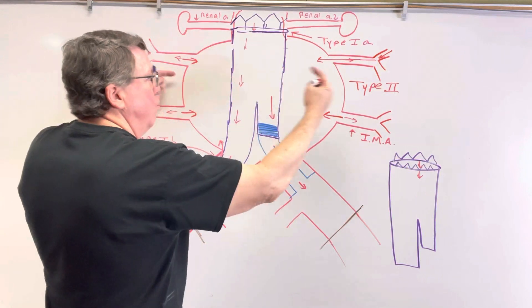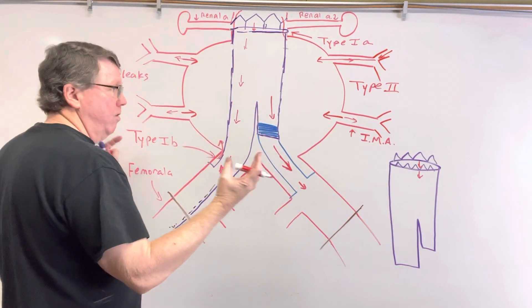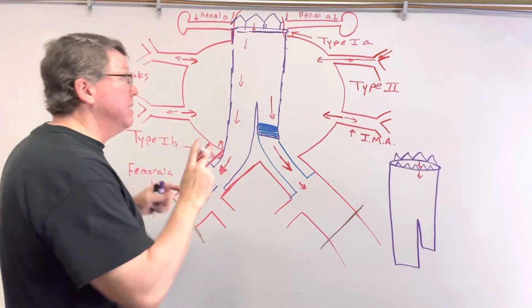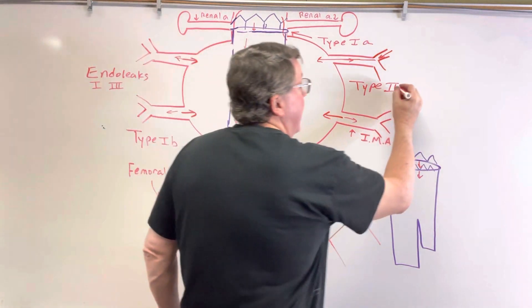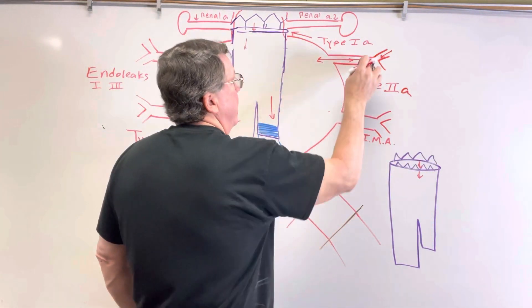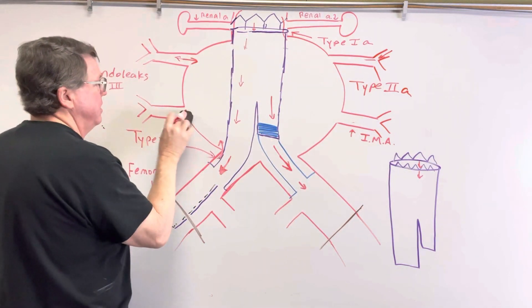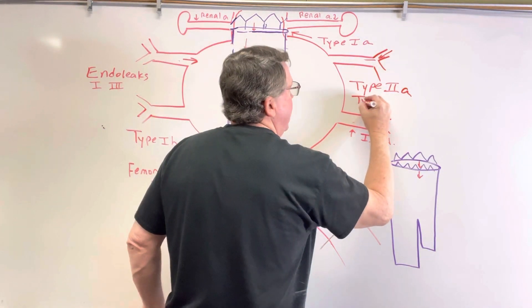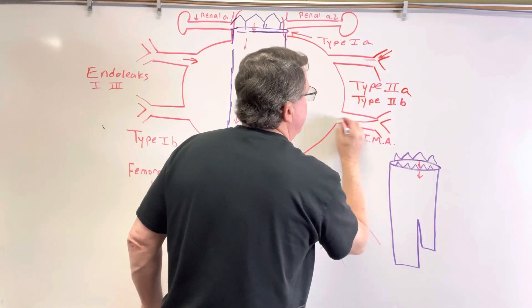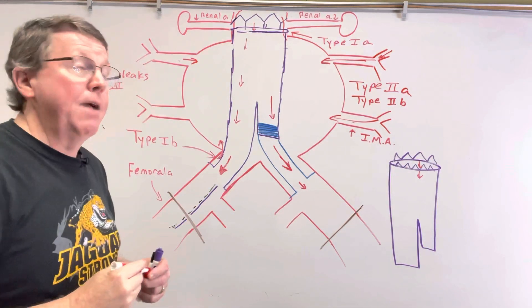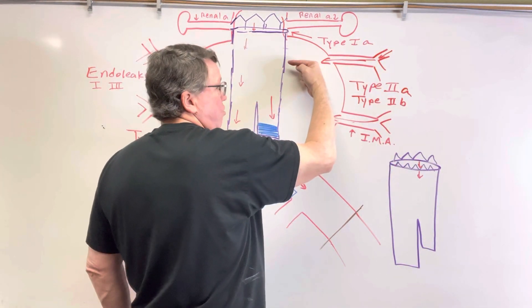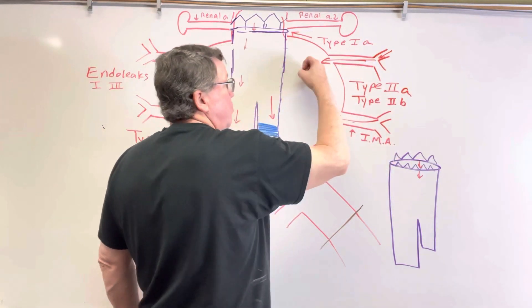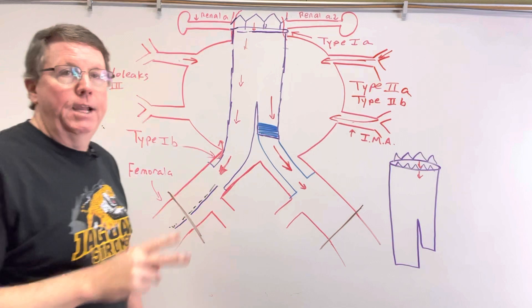Type 2 endoleak results in retrograde flow of blood into the aneurysm. The good news is most of the time doctors just watch these because many resolve on their own. Type 2a involves just one artery leaking back in, while type 2b involves more than one — several arteries leaking. Between heartbeats the blood may flow one way, and during the beat it flows back the other way.